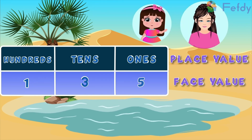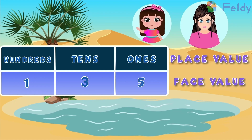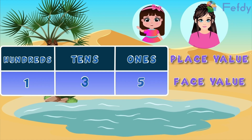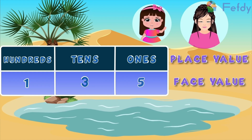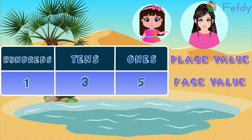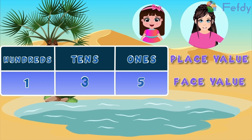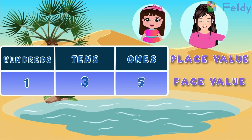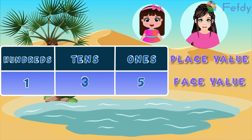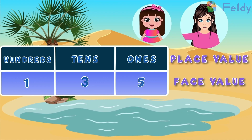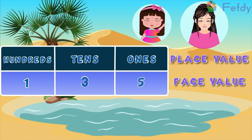Aunty, we learnt about place value and face value by looking at the trees and birds. But what are ones, tens and hundreds? Latif, let me tell you what ones, tens and hundreds are by looking at the Achillea flowers. Are you ready? Yes, Aunty.